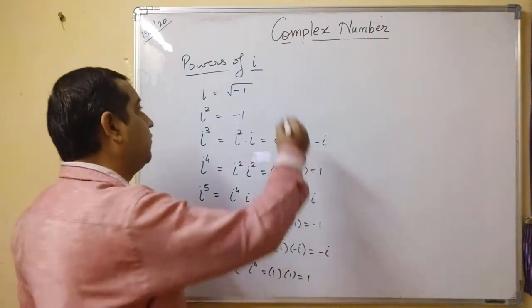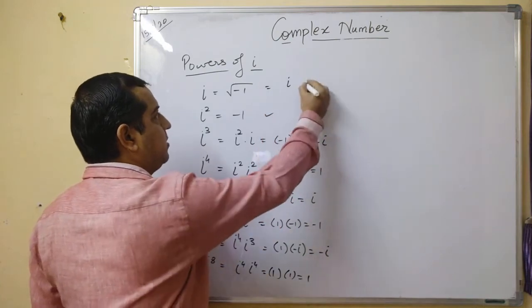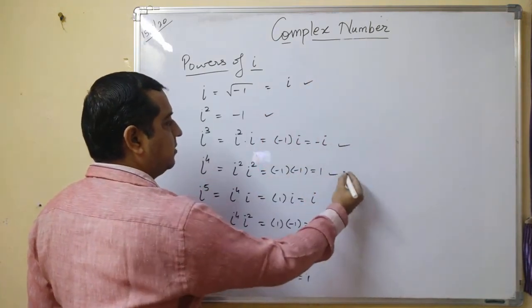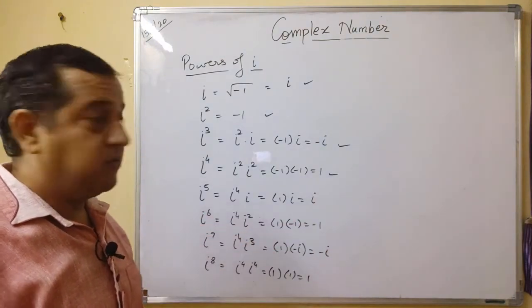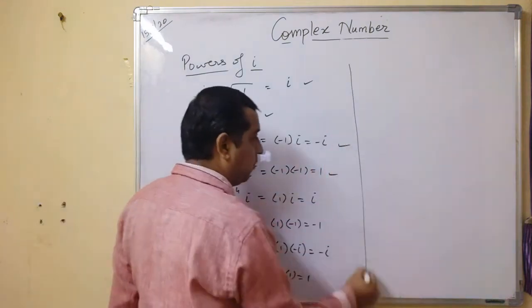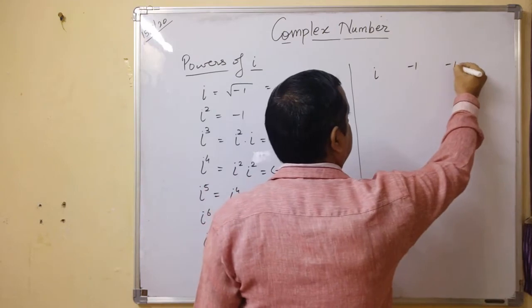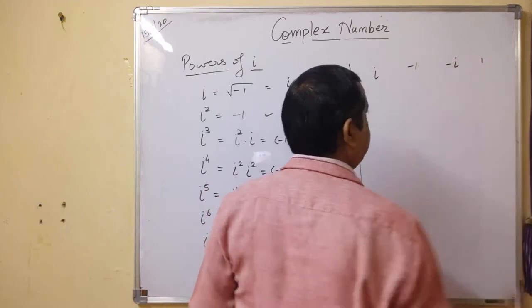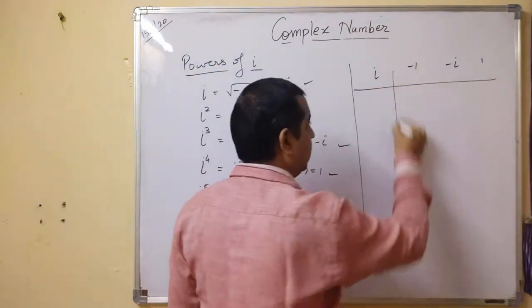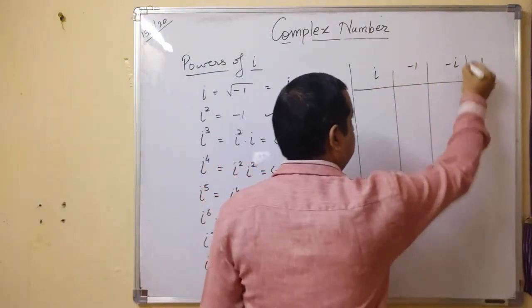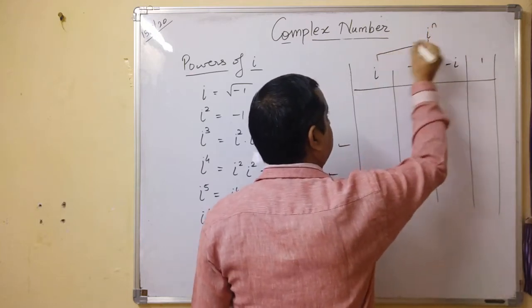So basically you can see we are getting only four values: i, -1, -i, and 1. Now the values repeat: i, -1, -i, 1. So we are having only four values which cycle. i raised to n has only four possible values.